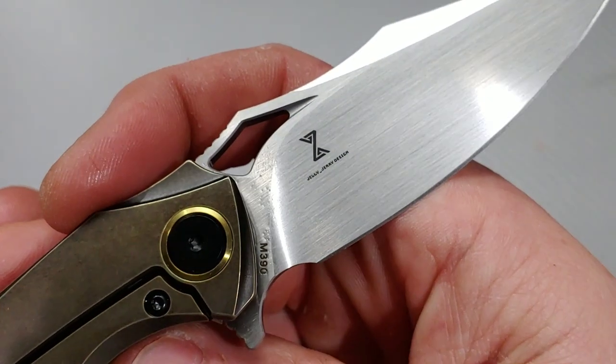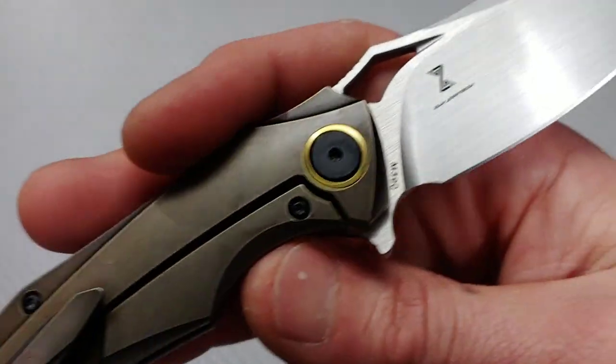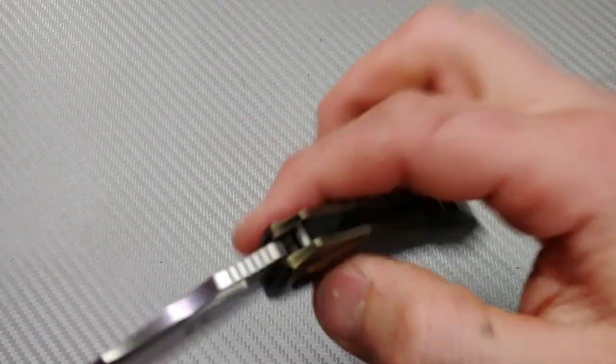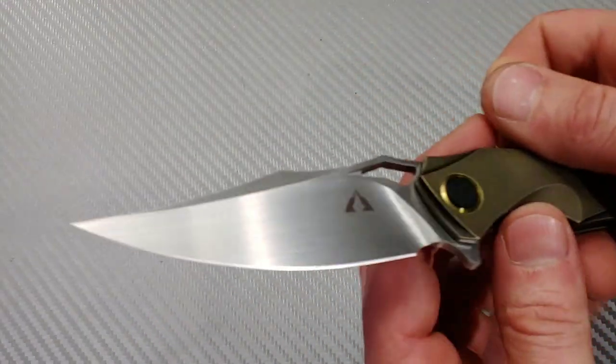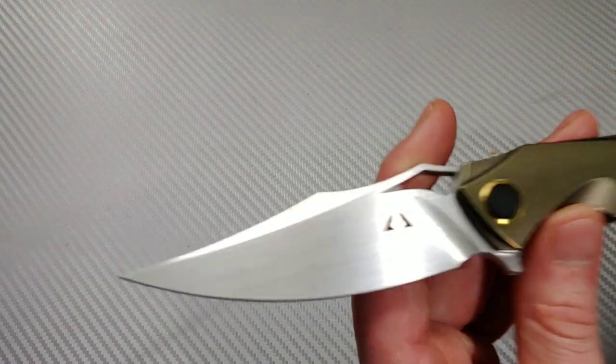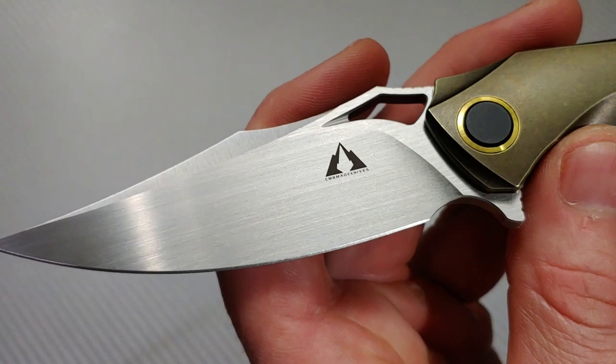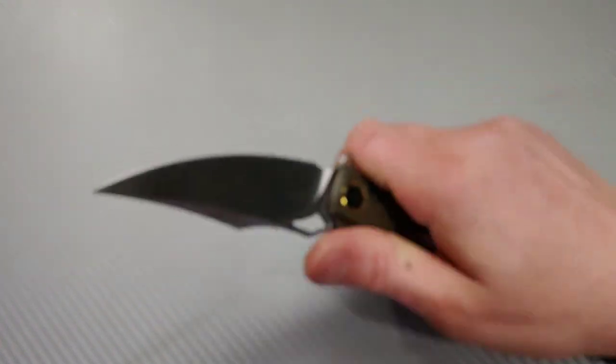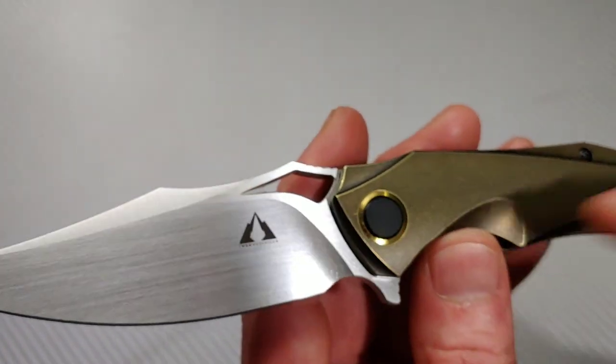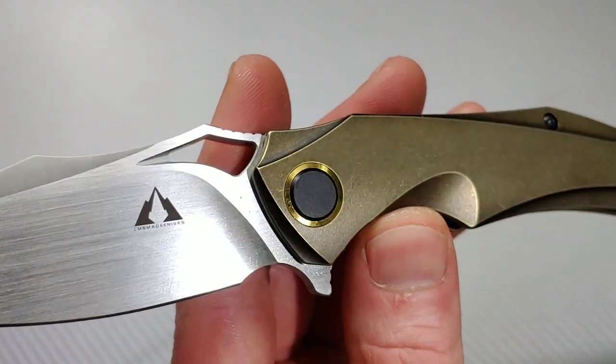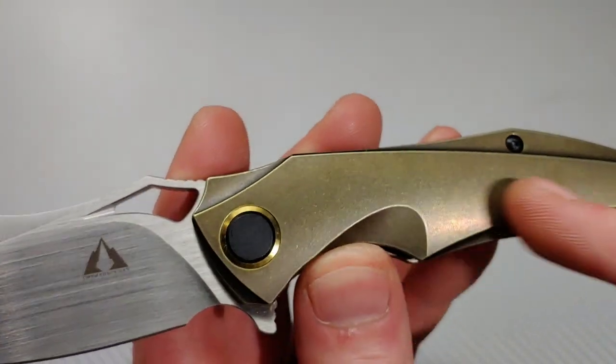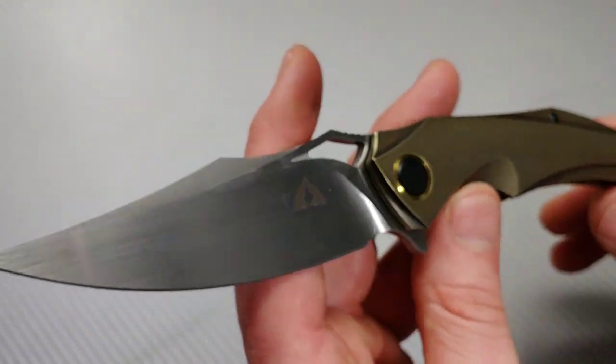M390 steel. Here is the designer, Jelly Jerry. I do have another Jelly Jerry design, I think I have two Jelly Jerry designs, one or two. But yeah, CMB knives, awesome to get one in hand. And there it is, CMB Made Knives. So what do you guys think? And I will definitely, like I said, have all the information. What do you guys think about this black hardware?